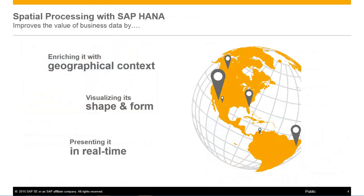I am now going to show you a very simple SAP HANA spatial app using spatial processing with SAP HANA, which allows you to visualize SAP Business One data in a graphical context, giving data shape and form, which is represented in real time. Spatial processing with SAP HANA improves the value of business data and brings together business data.